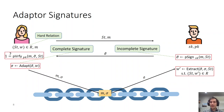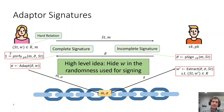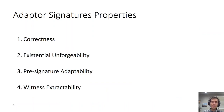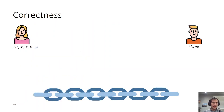So as you can see, an adapter signature has four additional algorithms: pre-sign, pre-verify, adapt, and extract. The high-level idea when designing an adapter signature scheme is to hide this witness in the randomness used for signing. I will go into more details regarding this idea later, but first I would like to give you the four properties that adapter signatures must satisfy in order to be called secure. The four properties are correctness, unforgeability, pre-signature adaptability, and witness extractability.